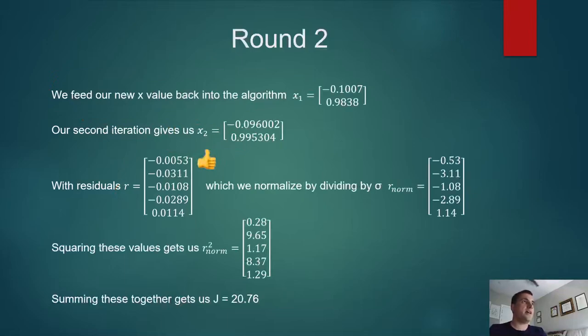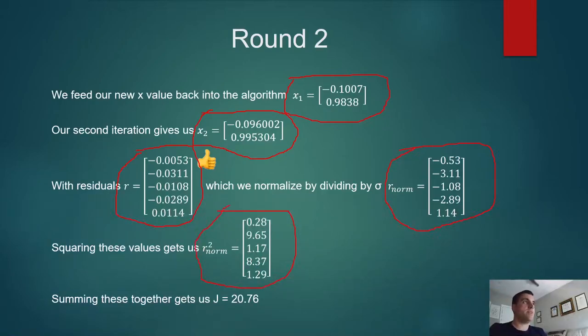We run it again and we get this for our x value. We use this as our input for our x's and we run the algorithm again and we get this for our second iteration for our x values and this for our residuals. This looks a lot nicer. We then normalize these residuals by dividing by the standard deviation and we get this. Then we square all of our normalized residuals and get this. We add them all together and we get j equals 20.76.